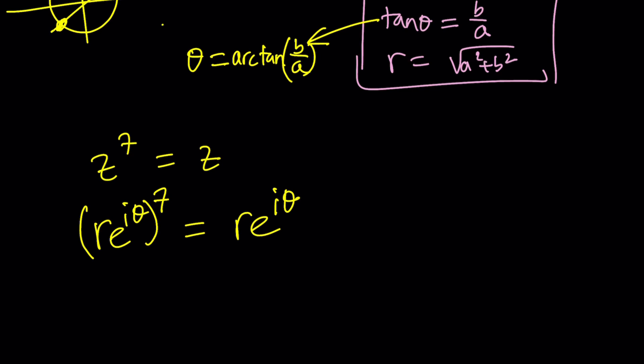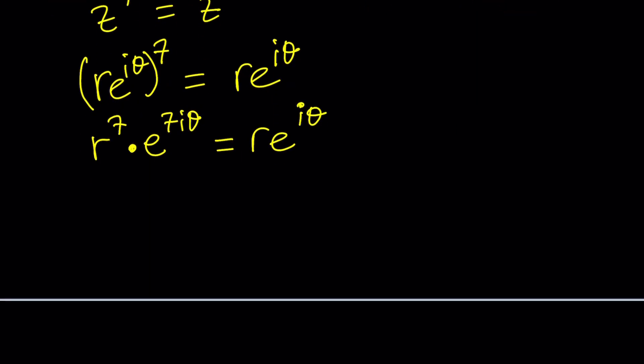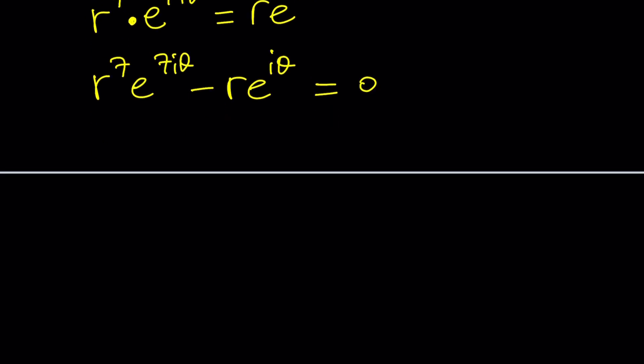We're going to raise both sides to the seventh power. We do r to the seventh and here it's just a matter of multiplying the exponents. We're trying to solve for z, so we need two things: r and theta. I can factor out r times e to the i theta. Inside the parentheses we get r to the six times e to the power six i theta minus one equals zero.